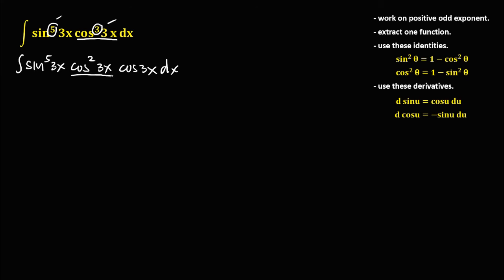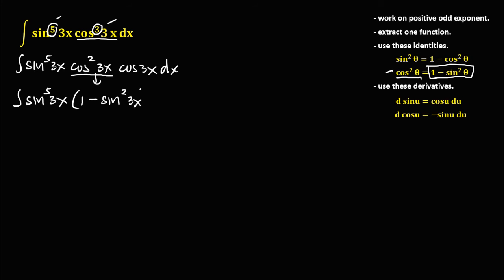Continue working on cos²(3x) using the identity: cos²θ = 1 - sin²θ. So we have the integral of sin⁵(3x) times (1 - sin²(3x)) times cos(3x) dx.